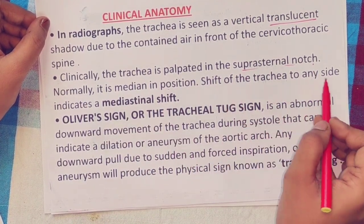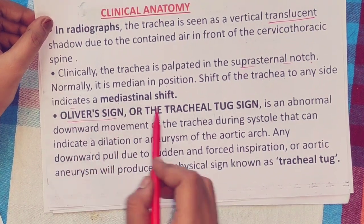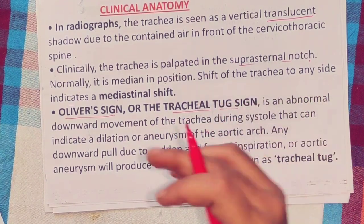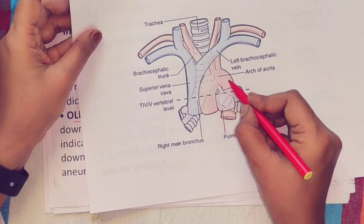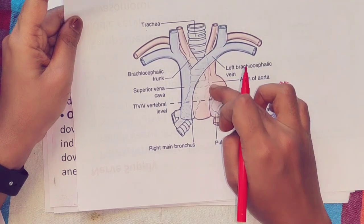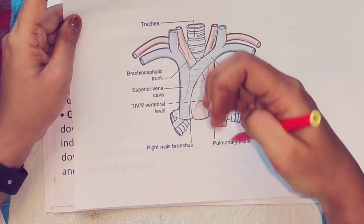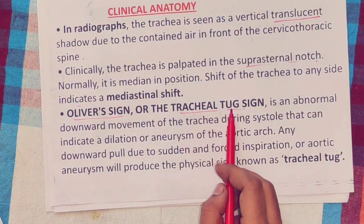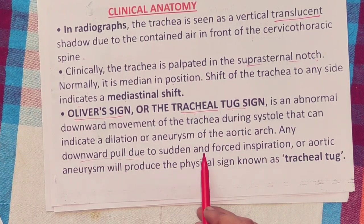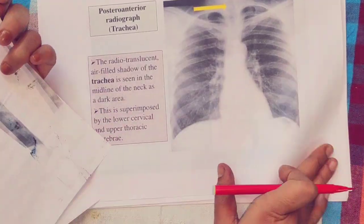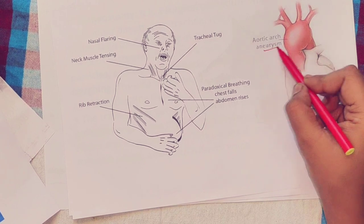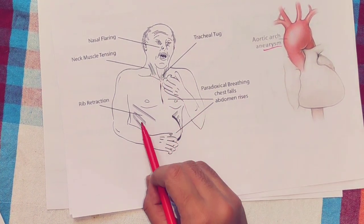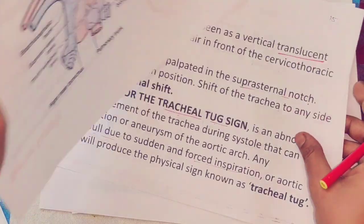Oliver's sign, or tracheal tug: this is an abnormal tracheal tug seen when there is an aneurysm of the arch of the aorta. The aortic aneurysm causes a sudden downward pull and forced inspiration. The neck muscles are tensed and ribs are retracted. This sign is called Oliver's sign or tracheal tug.